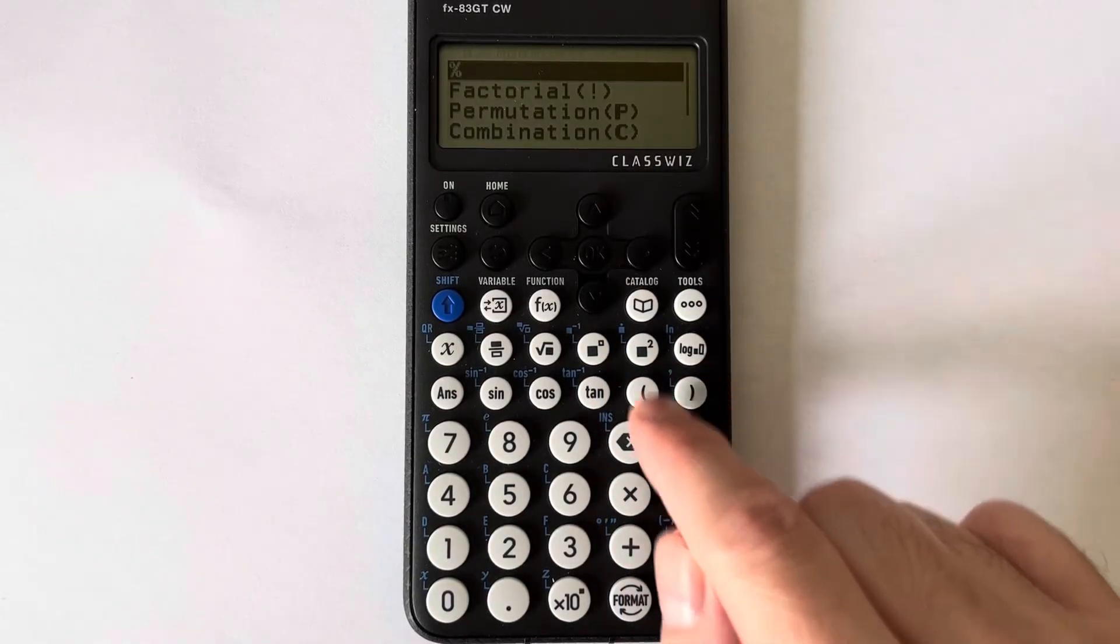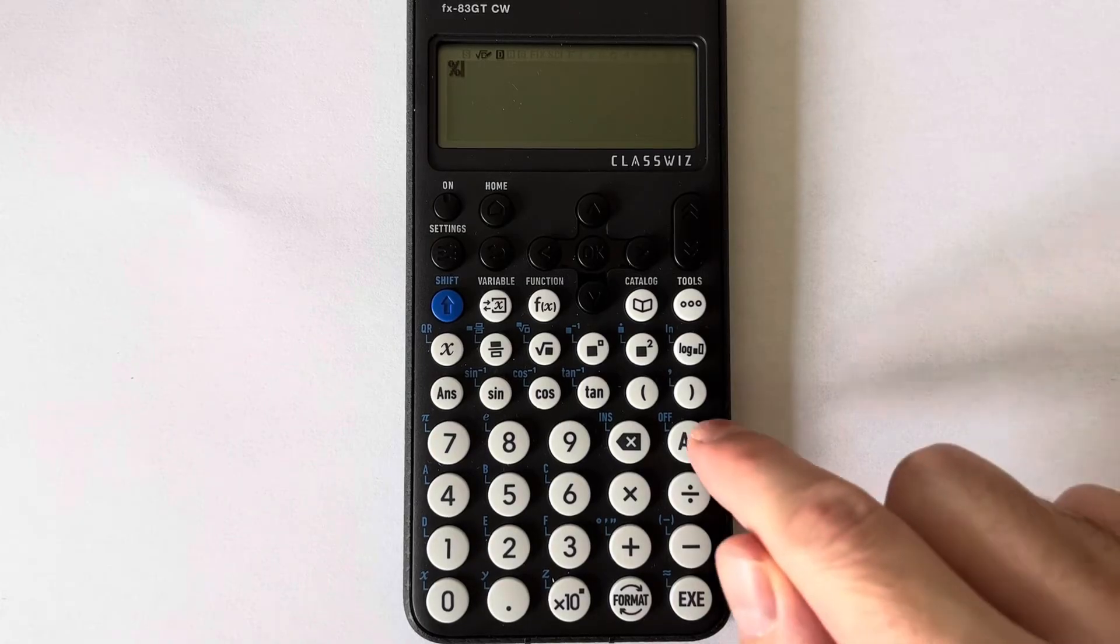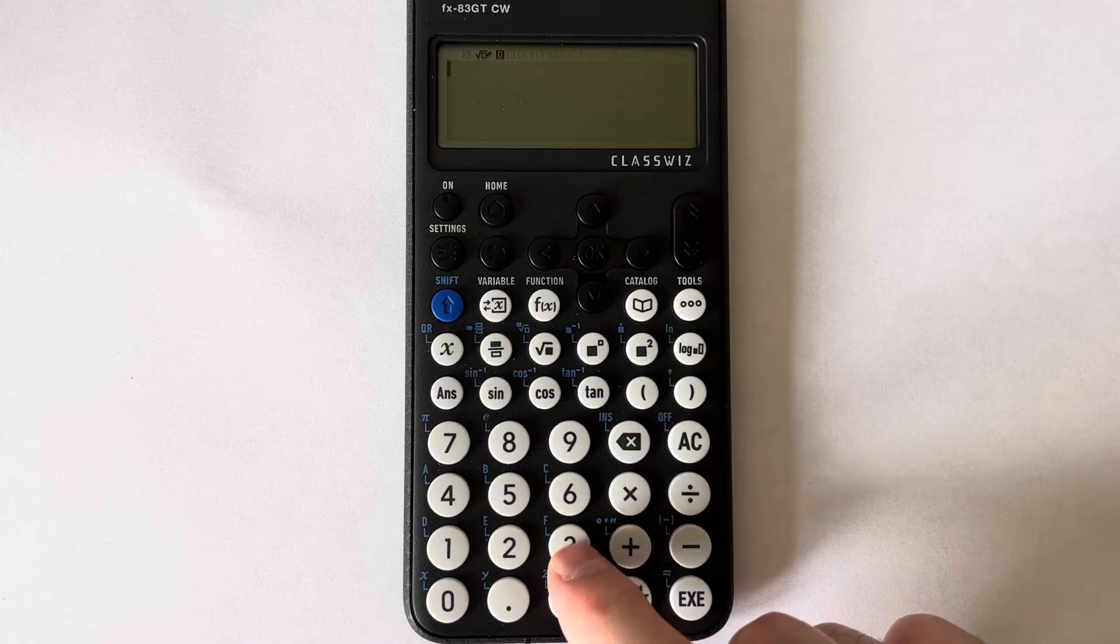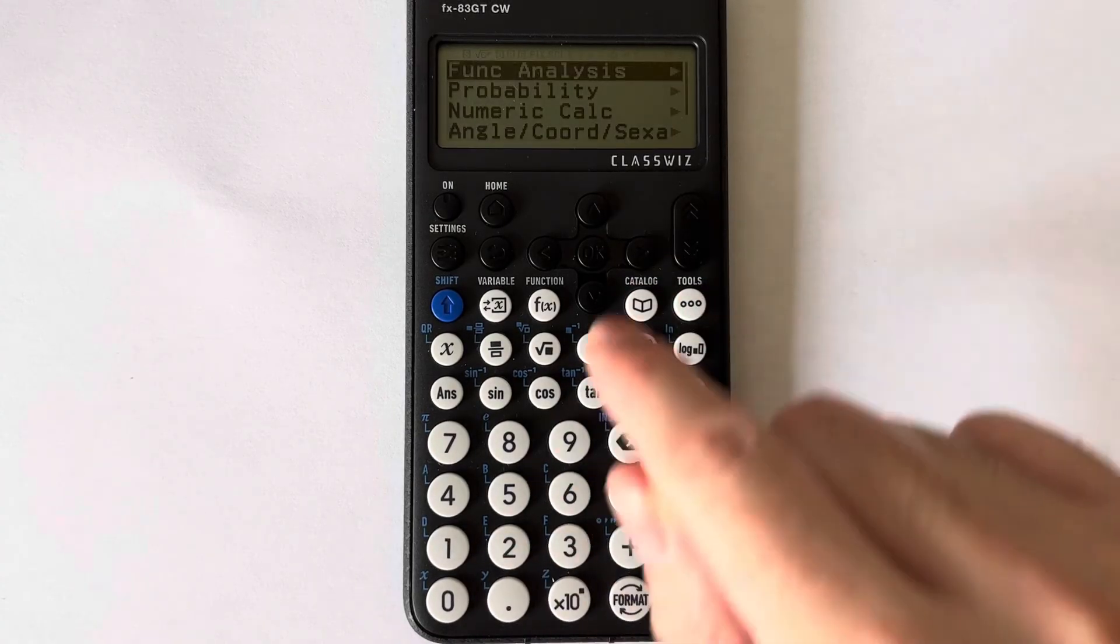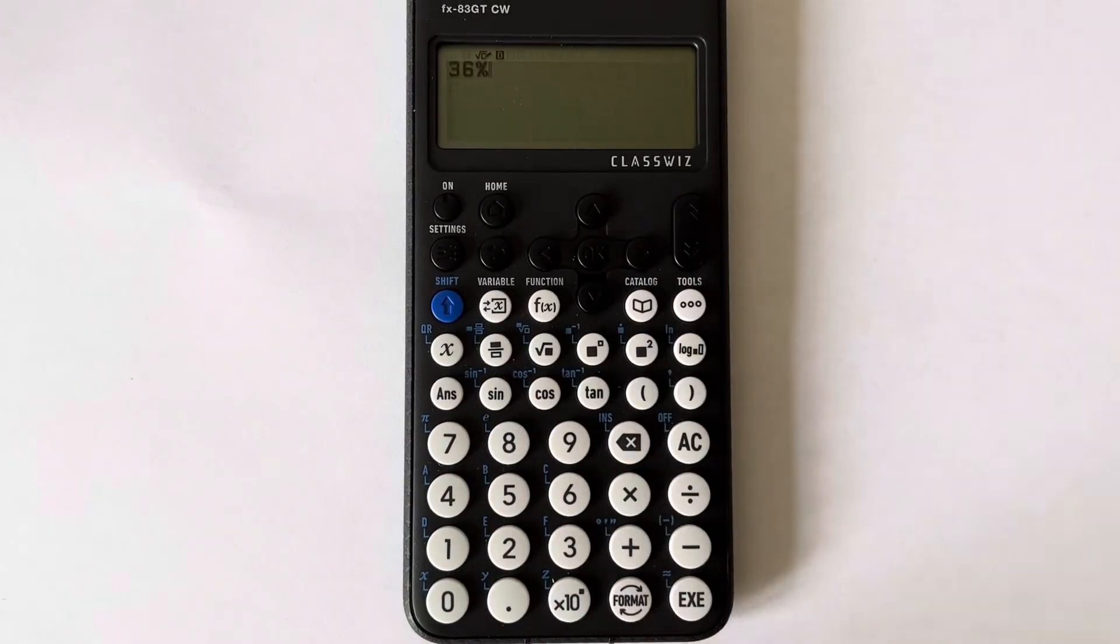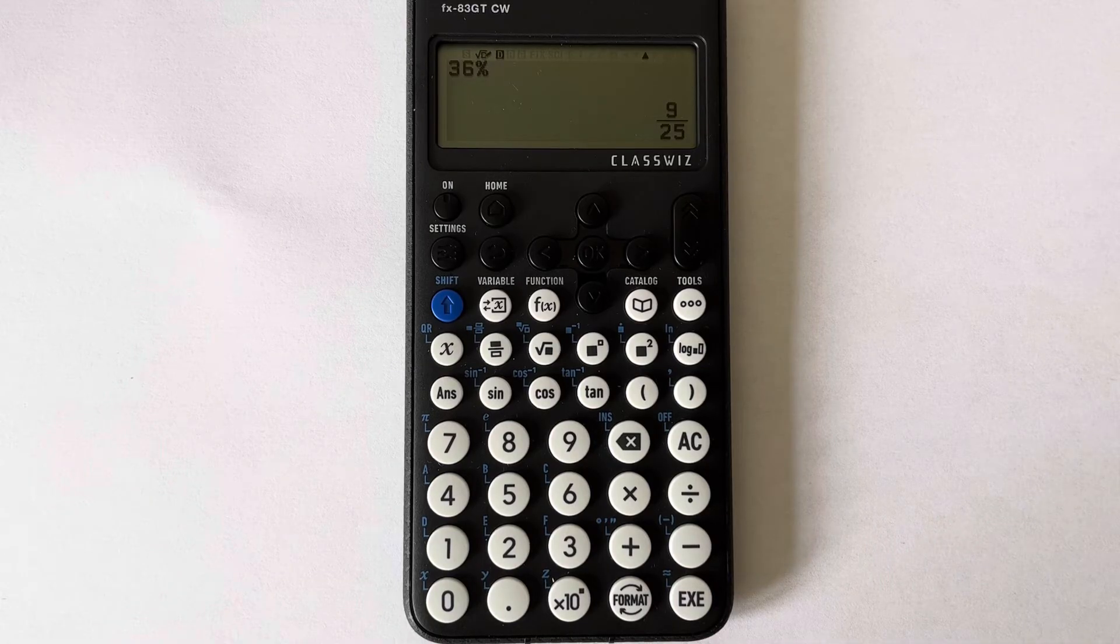So if we press OK again, let's have a go at typing in 36%. So let's type in 36, press catalogue, probability, OK again. If you press the equals, there you go, it's changed it to a fraction in its simplest form.